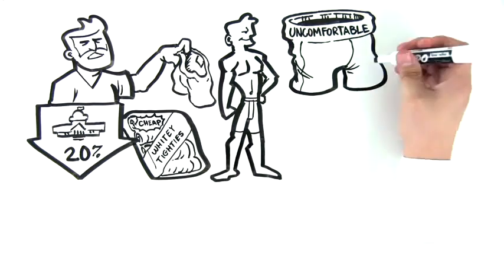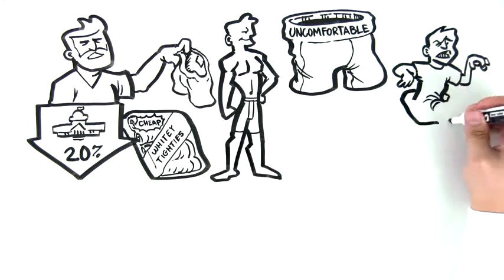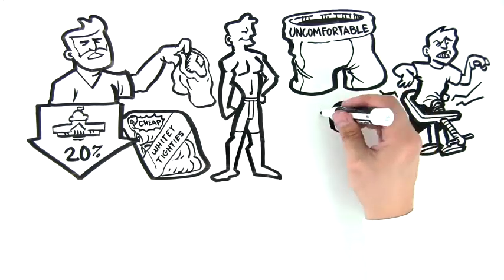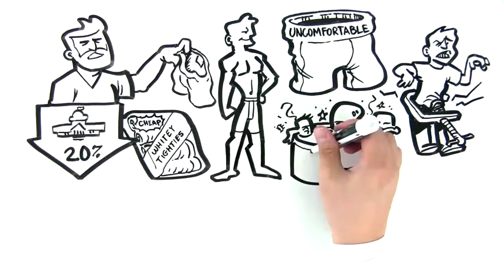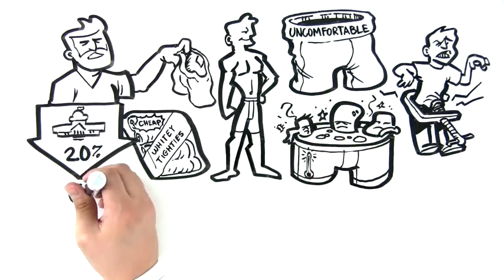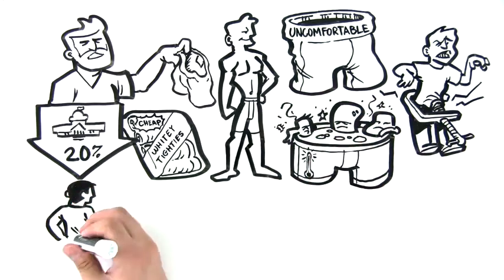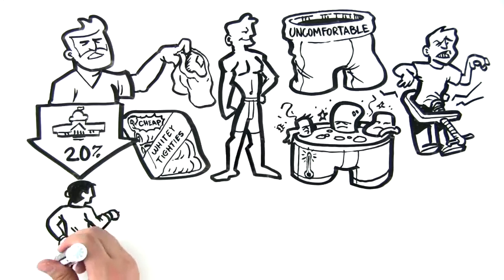Boxer briefs tighter than bike shorts, squeezing life from your legs with every step. Cotton and polyester fabrics that trap heat and bacteria, turning your groin into a smelly sauna. Thick materials bunching up, causing wedgies, chafing and all-day adjusting.